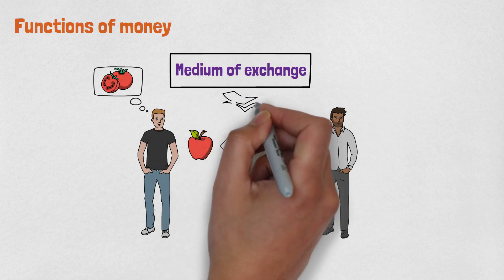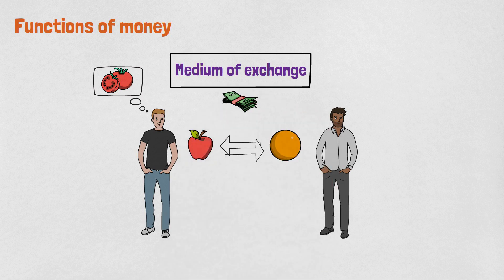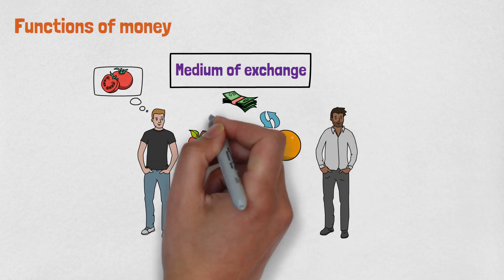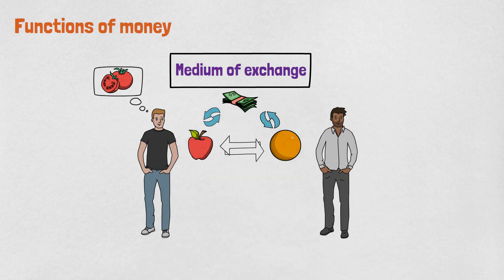Today, that is a currency such as dollar. When there is a medium of exchange, a person with an orange can sell it for dollars and buy an apple because the person with the apple knows he can buy a tomato with those dollars.